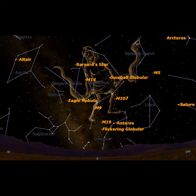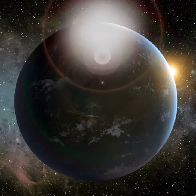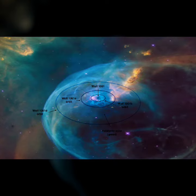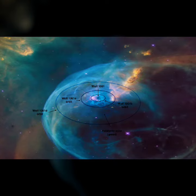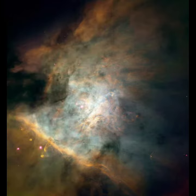Wolf 1061C orbits an M-type star called Wolf 1061, which is orbited by a total of three planets. This star has a temperature of 3,380 Kelvin. Its age is unknown but estimated to be around a few billion years.